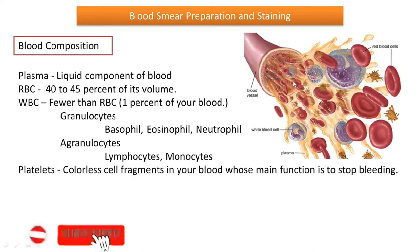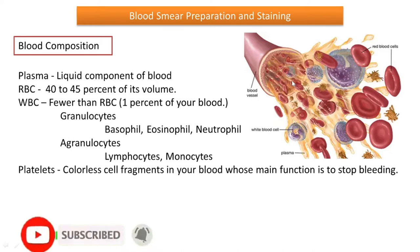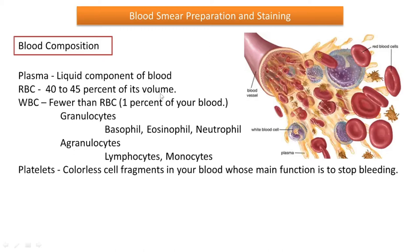RBC is also present — we know that it is the red blood cell, it is red in color, and it accounts for 40 to 45 percent of the volume of blood in our body. Next come WBC — they are colorless blood cells and their amount is less than RBC; they account for only one percent of our blood.